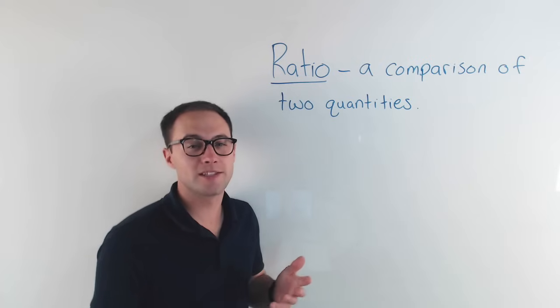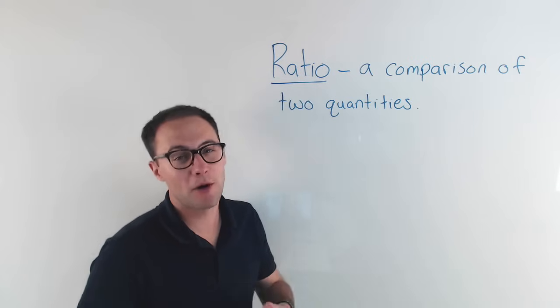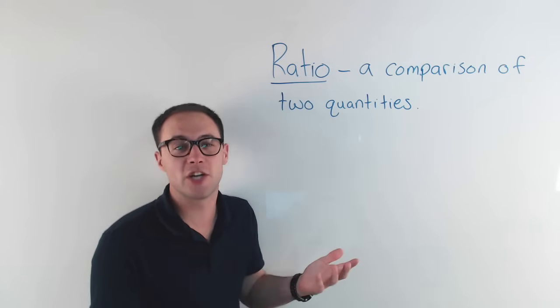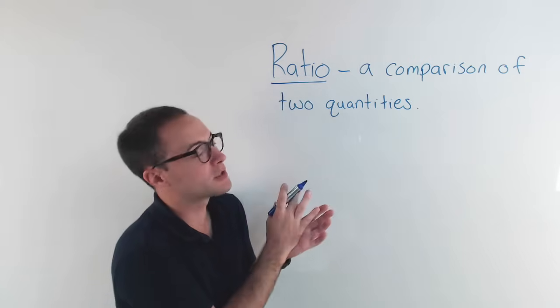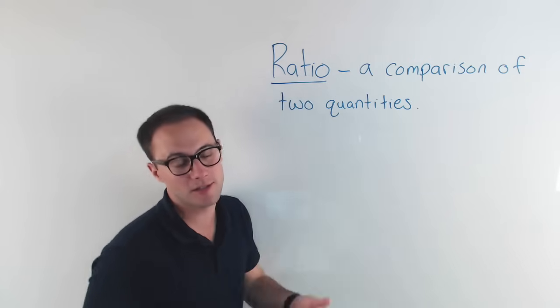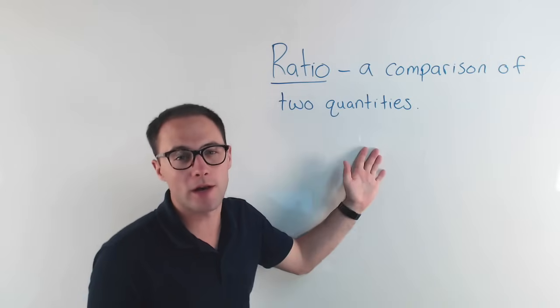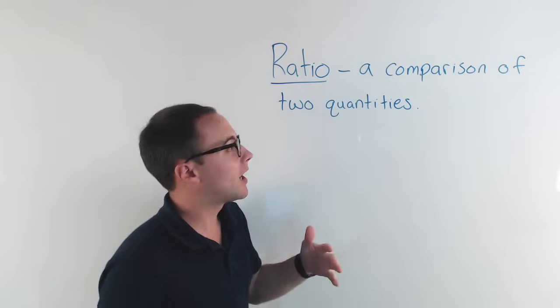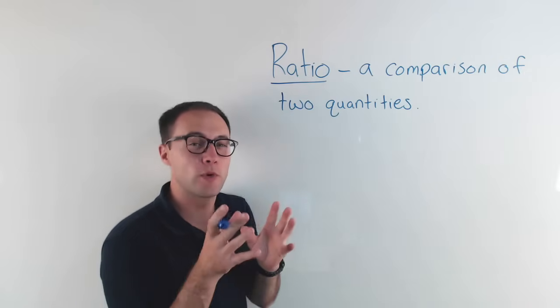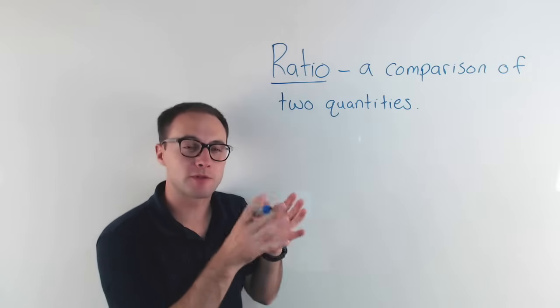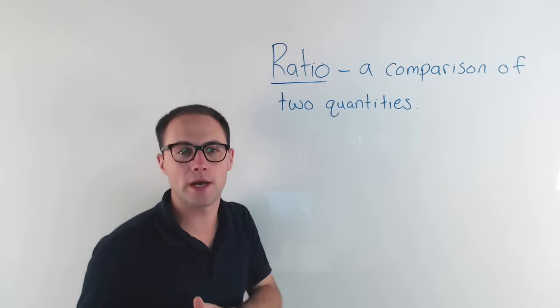Before we get into an example, let's talk about what a ratio is. A ratio is pretty simple — it's just a comparison of two quantities. And the thing is, we can write ratios three different ways.